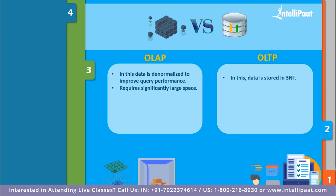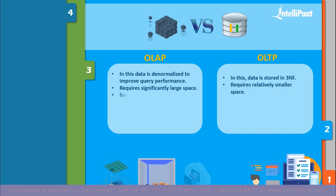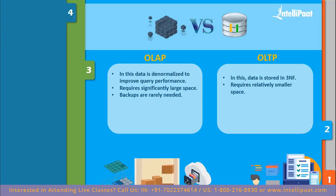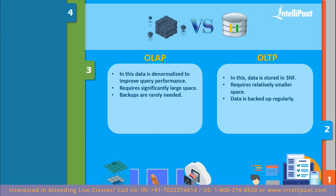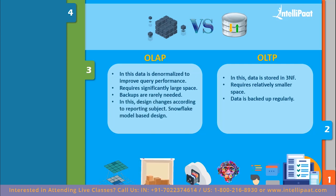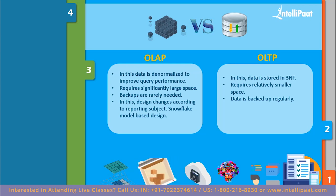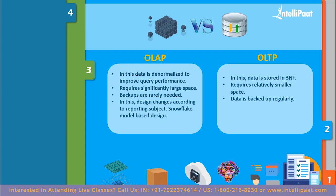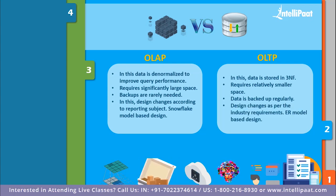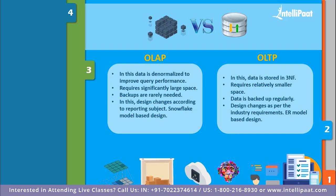For storage: OLAP requires significantly large space as it stores huge amounts of historical data from multiple sources and requires aggregate structures and numerous indexes to optimize query performance. Relatively smaller space is required for OLTP as it is based on current data only. For backup and recovery: in OLAP, backups are rarely needed because it is built to persist data, but in OLTP, data is backed up regularly without fail because it stores all functional business data. For design: in OLAP, design changes according to reporting subjects like sales, inventory, and marketing, and the snowflake model is used. In OLTP, design changes as per industry requirements — such as airline, medical, and retail — and the ER model is used.